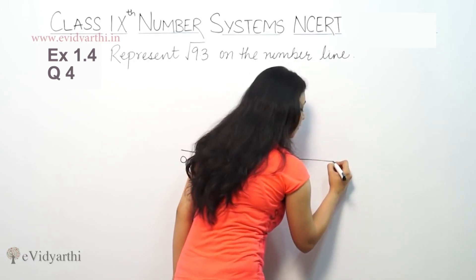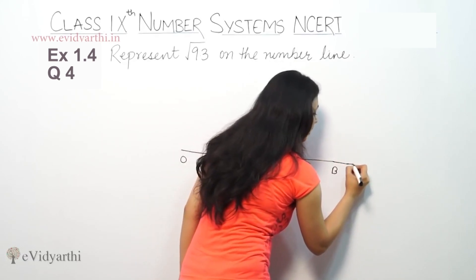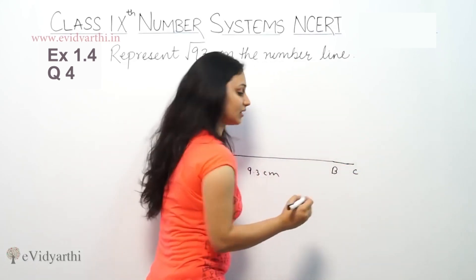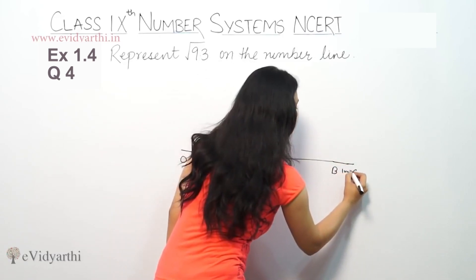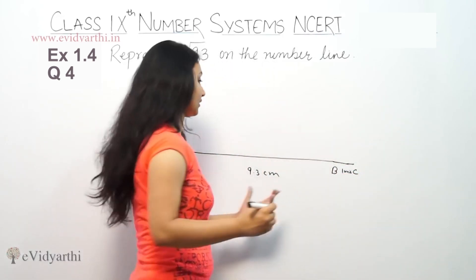extend from B forward by 1 centimeter, I mean 1 unit. This is 1 unit, so this is 1 centimeter forward.